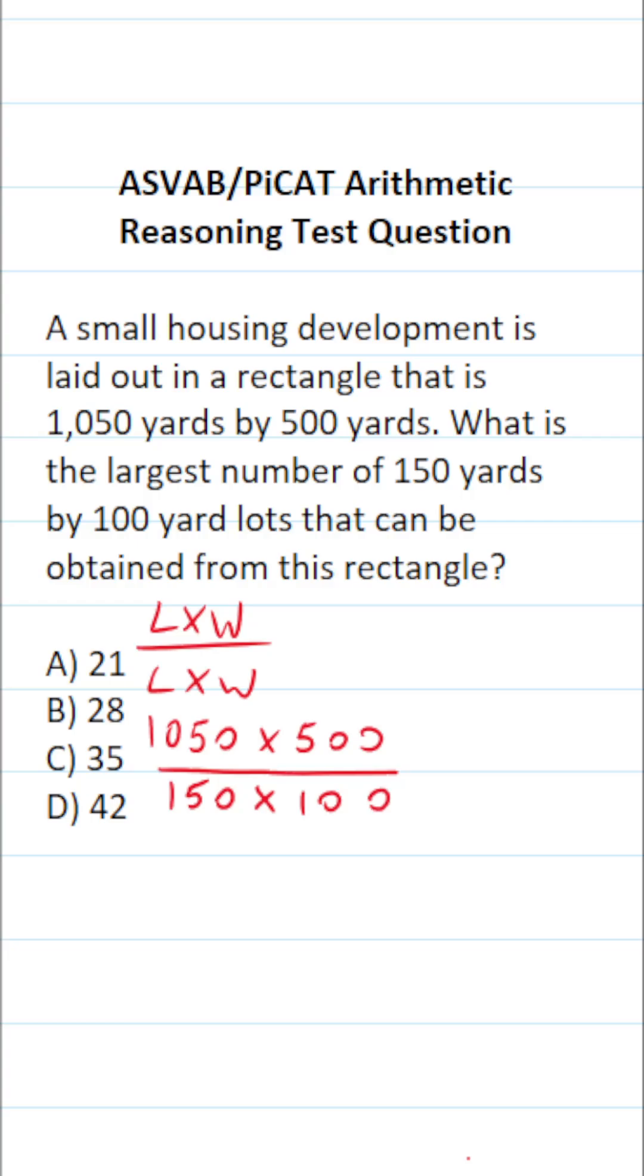So all we have to do is take this area and divide it by this area. And there is a trick as to how to do this one very easily. I can actually break this apart like this. We have 1,050 divided by 150 times 500 divided by 100.